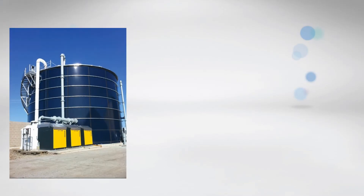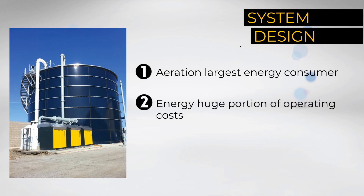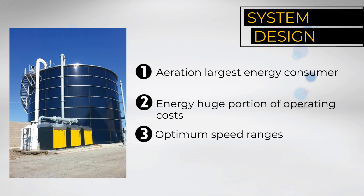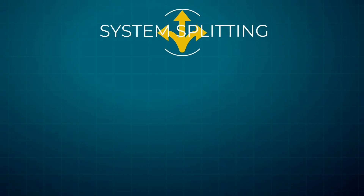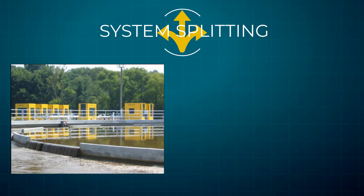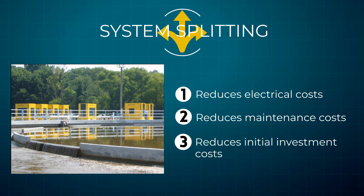With aeration being the highest energy consumer and energy being a huge portion of plant operating costs, good system design is essential. System design must go beyond the selection of blower units with efficient technologies. The blowers must be sized and controlled in concert to operate within their optimum speed ranges. Far too many blowers fail to meet their promise of efficiency because they are sized to operate in one set of conditions, but usually run in another. System splitting with adaptive control reduces both electrical and maintenance operating costs, and may even reduce the initial investment cost as well.